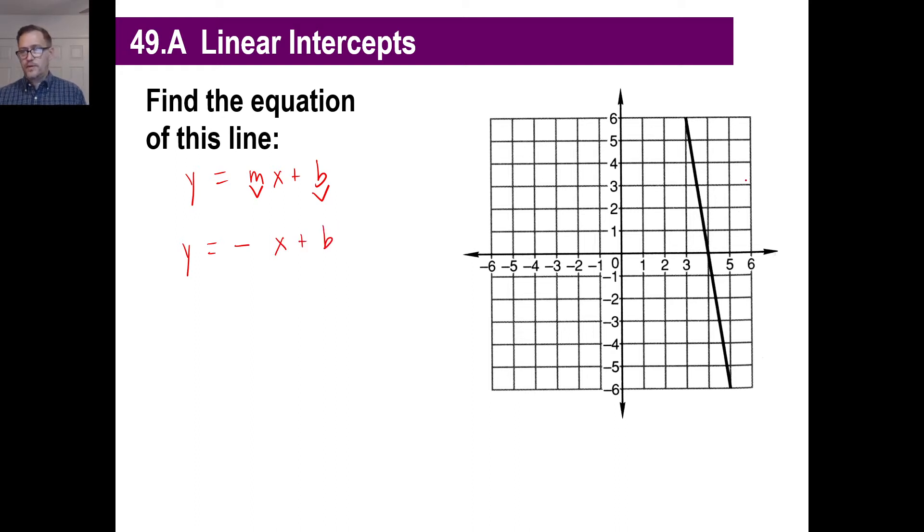To find the slope, you can just pick any two points you want. Let's say it's this point, and that looks like that's right on the corner there. I'm going to go down. One, two, three, four, five, six, and then one. So, six over one is just six. So, there's my slope, right?